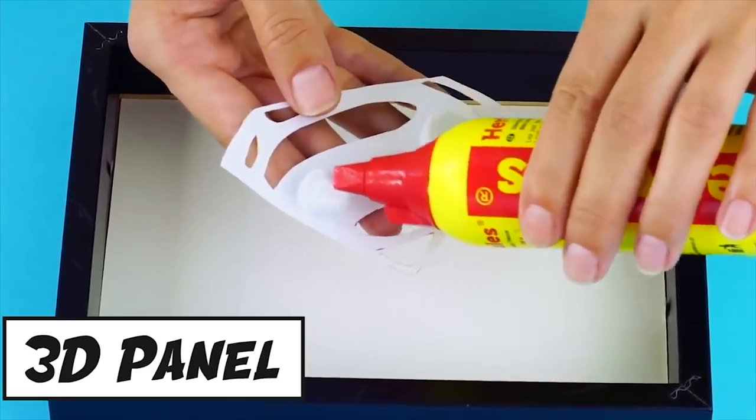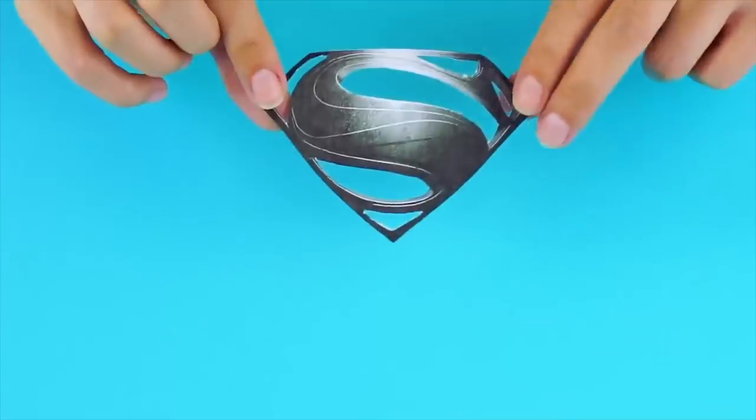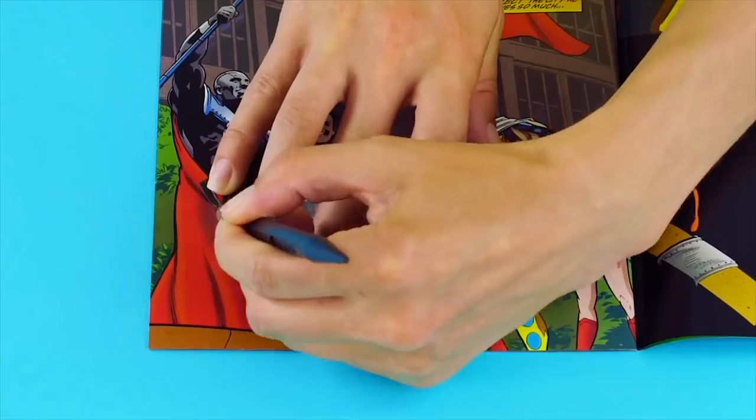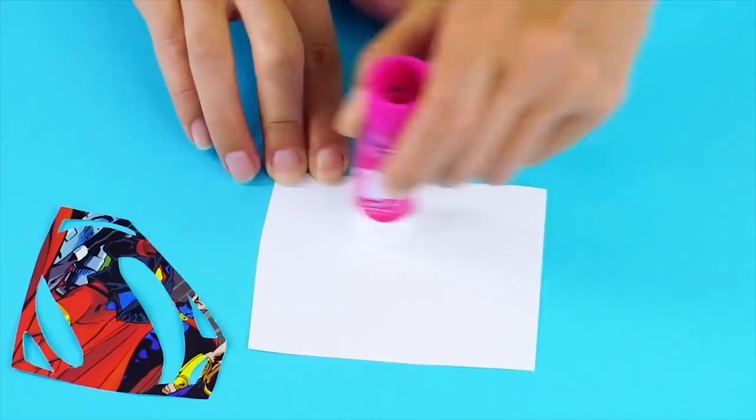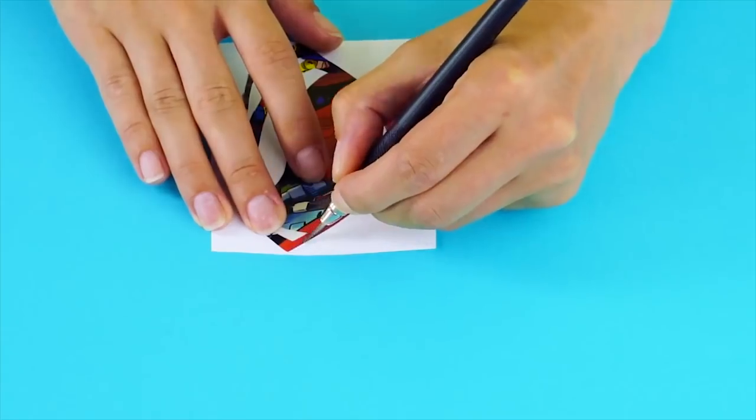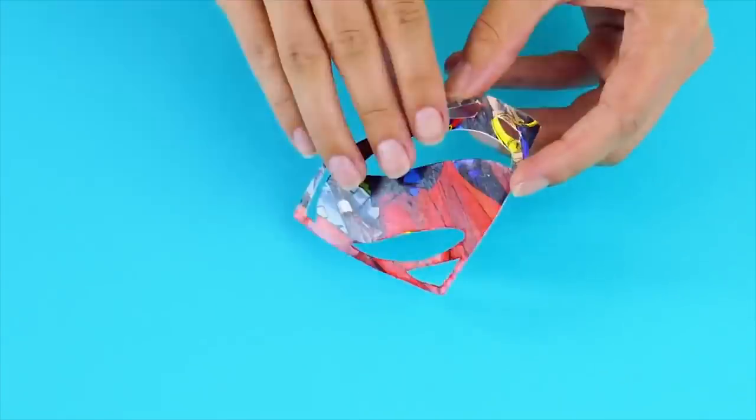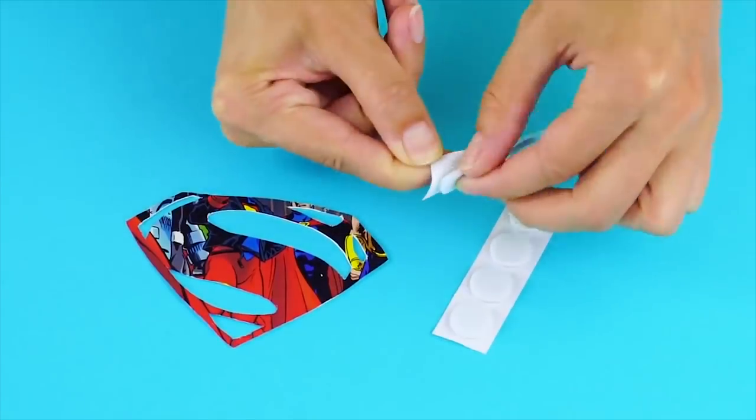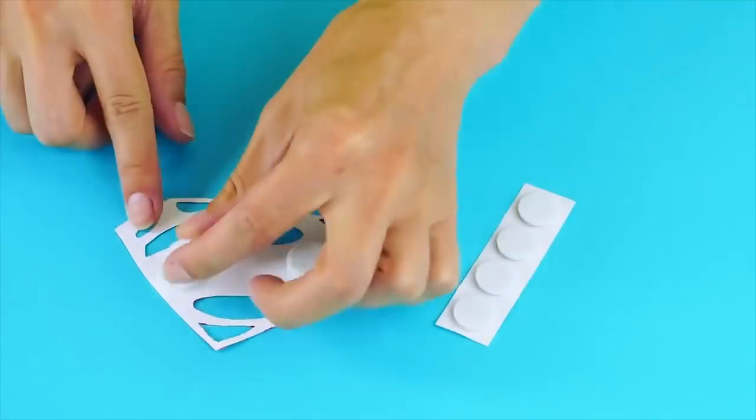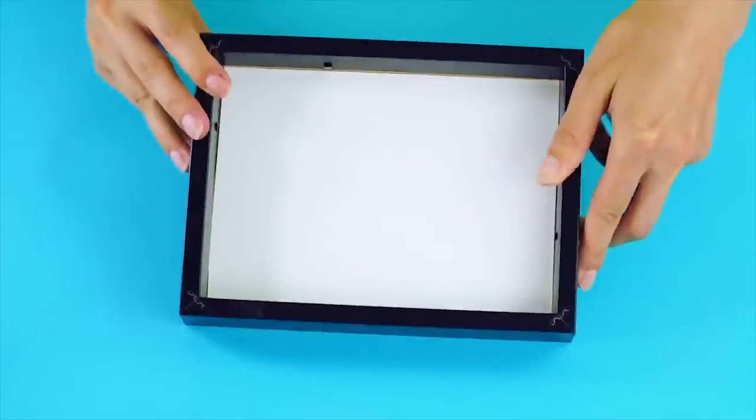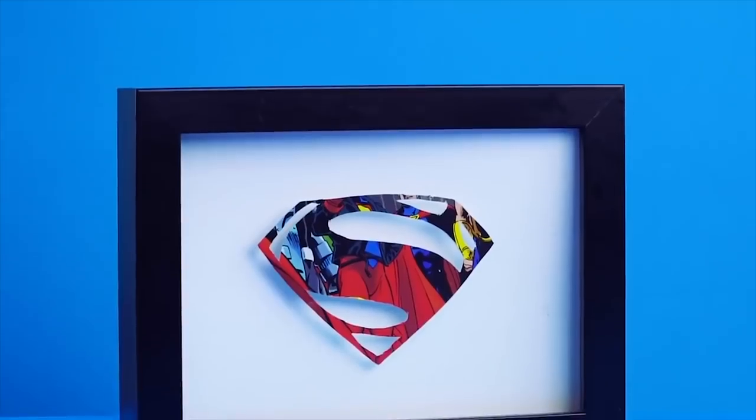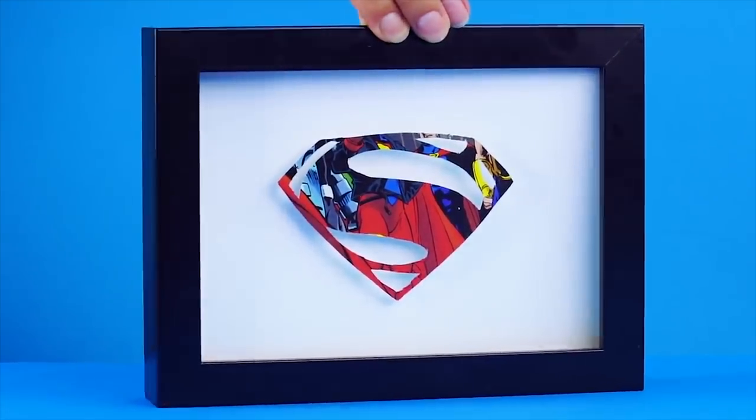3D panel. Here's a cool trick. First, get a print of your favorite superhero logo and put it over a page in a comic book. Cut out the logo with an exacto knife. Use the glue stick to glue the comic book page logo onto a white piece of paper. Cut off the white paper on the outside. Stick foam stickers on the back of the logo. Add another layer of foam stickers. Now glue the foam stickers to the inside of a picture frame. Now you've got a 3D art piece in the shape of your favorite superhero logo.